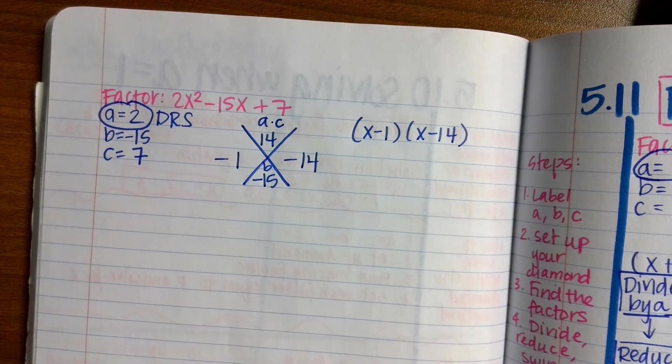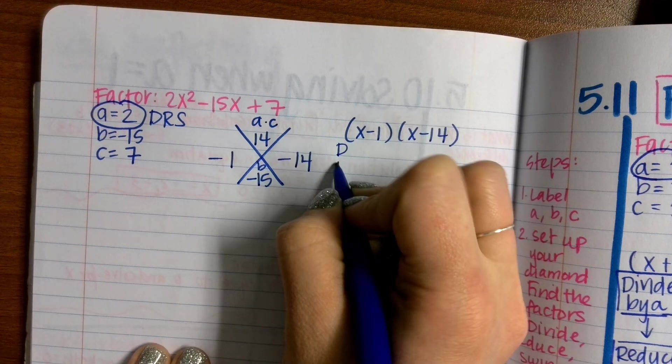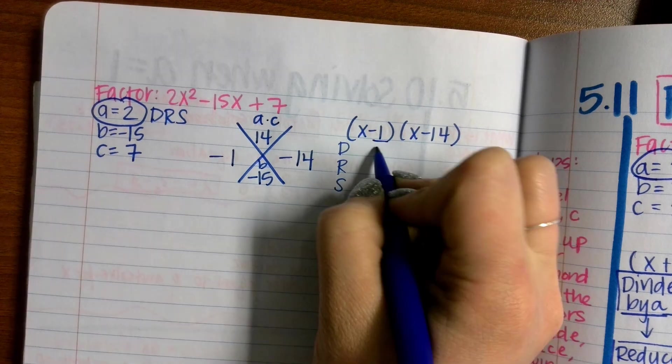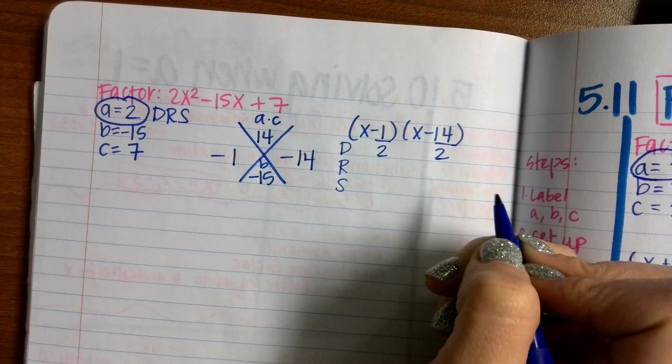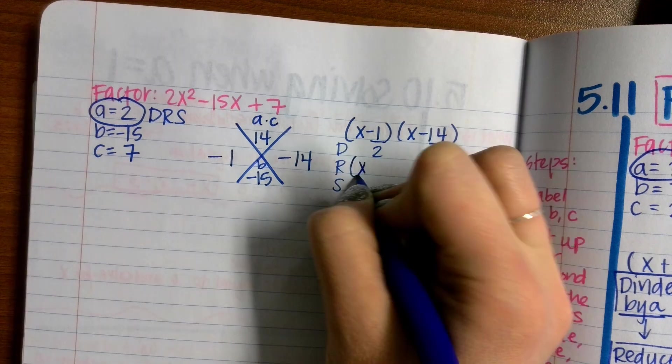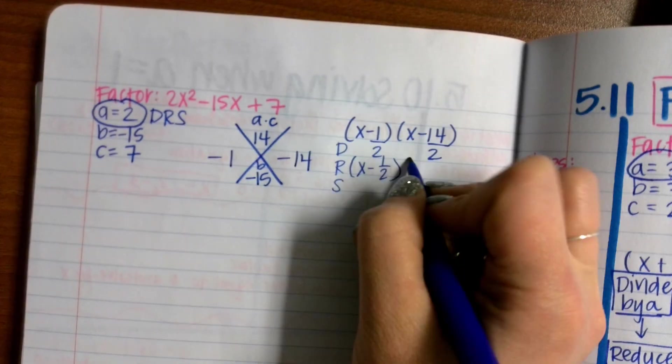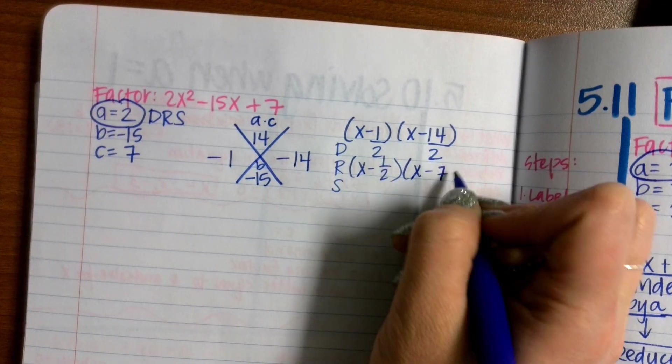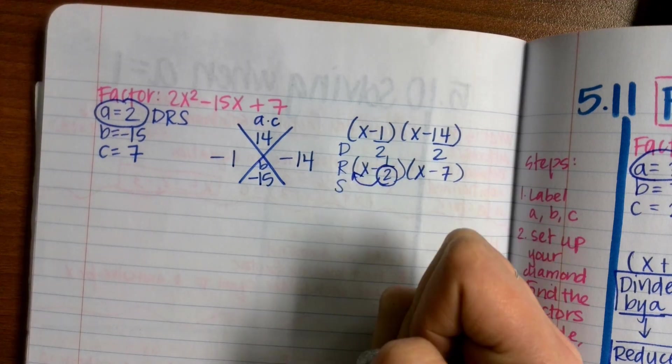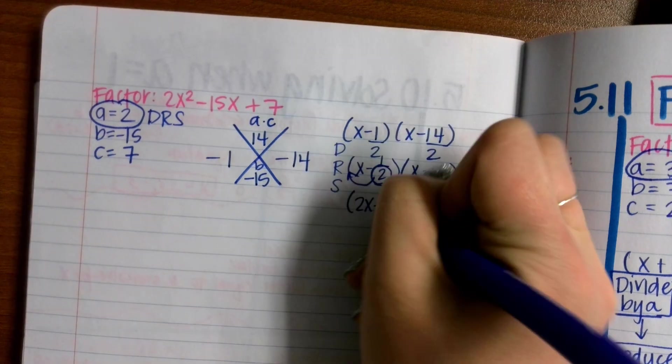This is not my answer. D, R, S. D stands for divide by A. Divide by 2. 2 is A, right here. R stands for reduce. I can't reduce 1 over 2, but I can reduce negative 14 divided by 2. That's negative 7. And S stands for swing. Swing anything that's left in the denominator up to be the coefficient in front of my X. 2X minus 1, X minus 7. That's my answer.